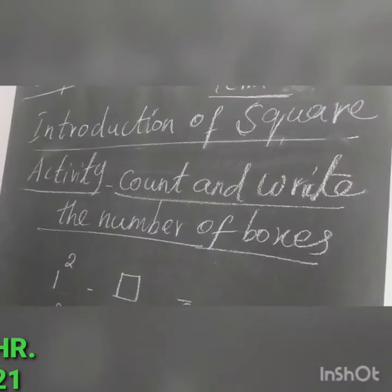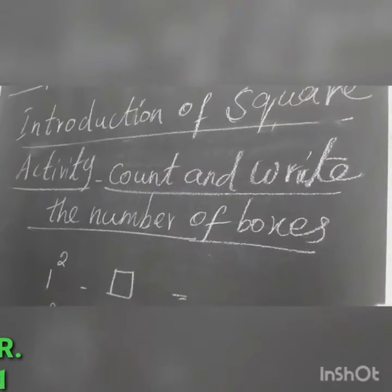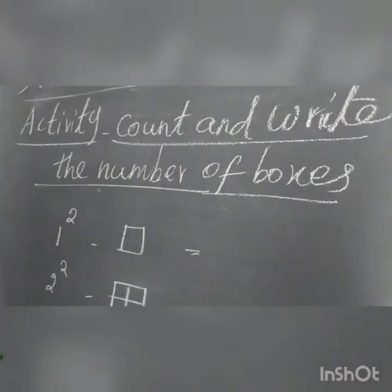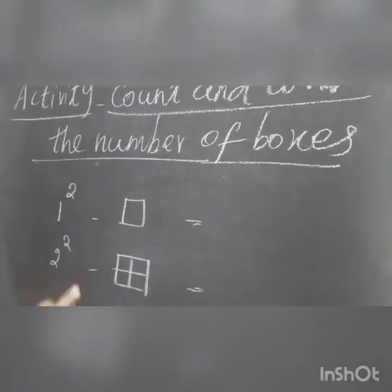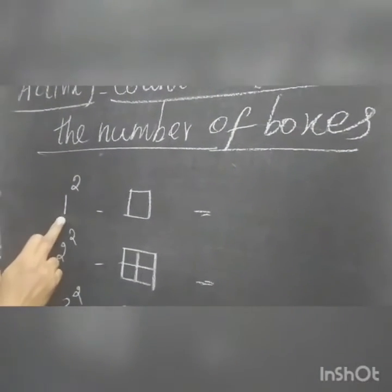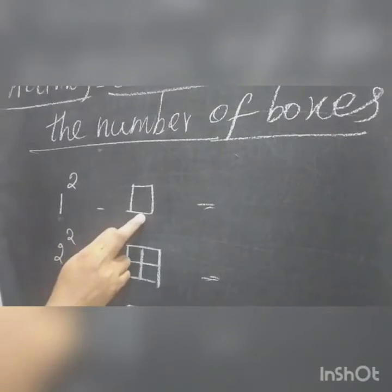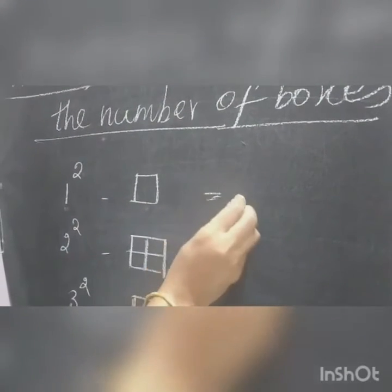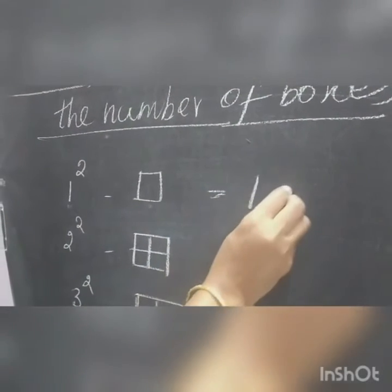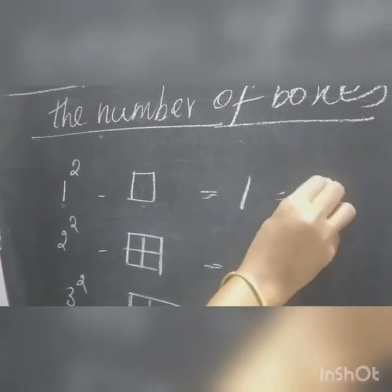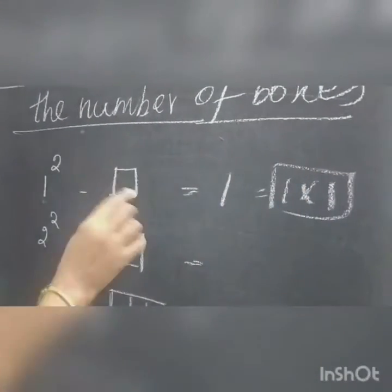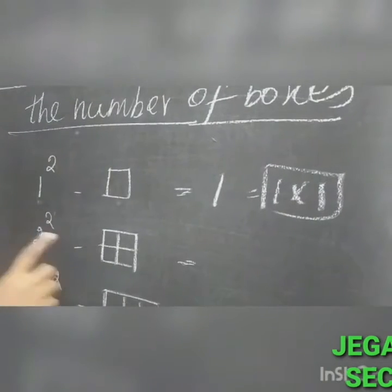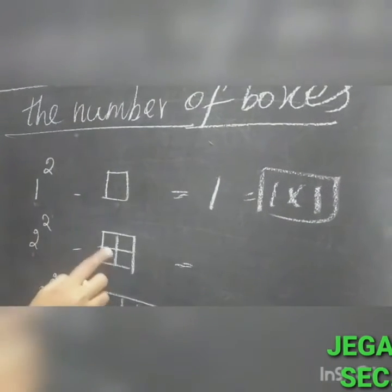Now see the activity. The heading is: count and write the number of boxes. The boxes are given. First one: 1 square — 1 box — so 1 multiplied by 1, the answer is 1. For 2 square, it is 2 multiplied by 2.